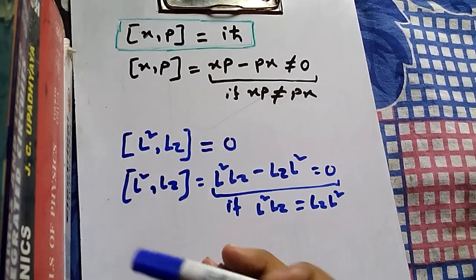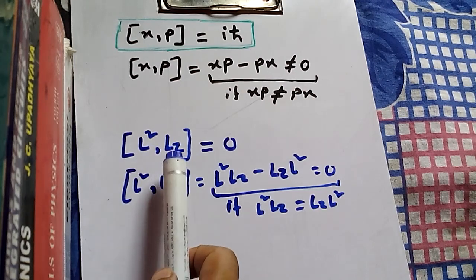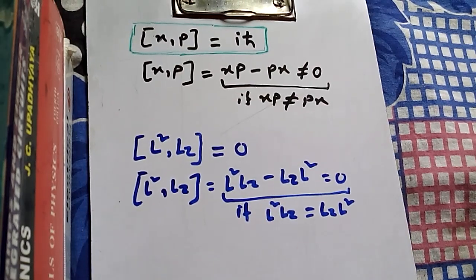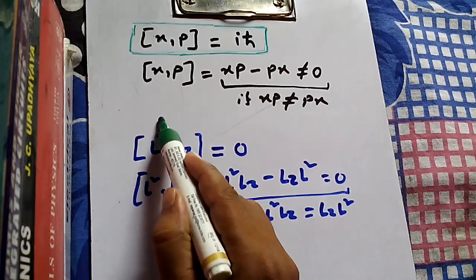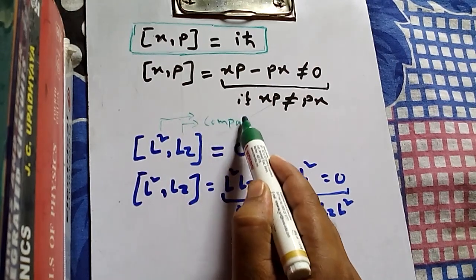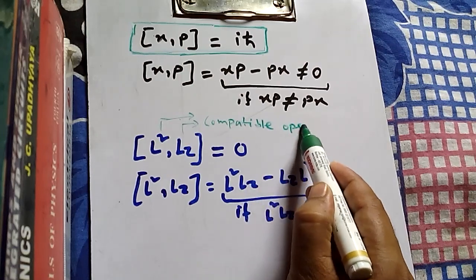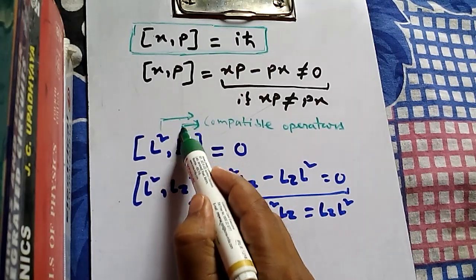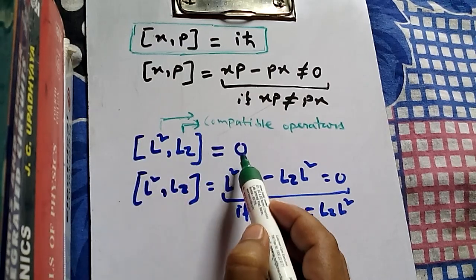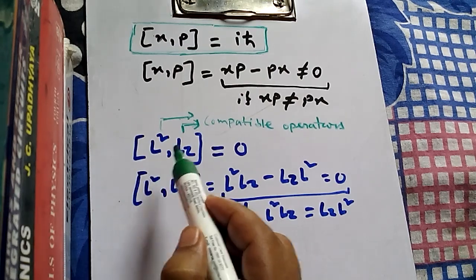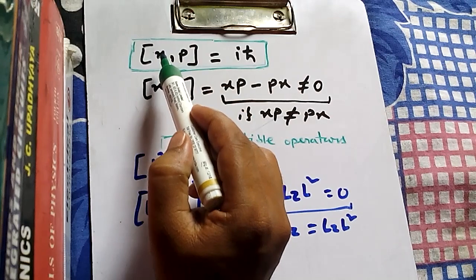Now these two operators — L-squared and Lz — are called compatible operators. This is a very important nomenclature. If for two operators the commutation relation equals zero, meaning they commute with each other, then we know those two operators can be found simultaneously, and they are called compatible operators.